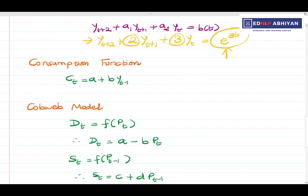An economics application is the consumption function: ct equals a plus b times yt-1. This means our consumption depends upon our previous year's income, which is a positive relationship. If income increased last year, then consumption will increase this year. This is a first order difference equation modeled at time t-1.